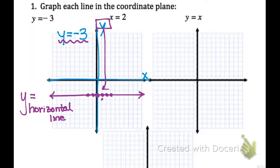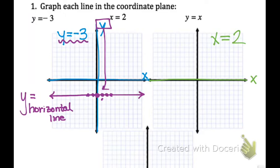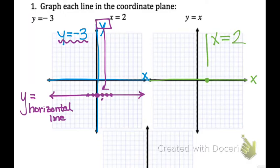The second graph I want to do is x equals 2. We'll do x equals 2 in this coordinate plane. Keep in mind our x-axis is the horizontal axis. On the x-axis, we go to positive 2, and we want all the points where x equals 2. So we draw the line that's perpendicular to that axis.